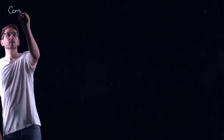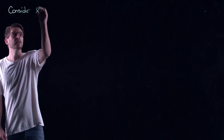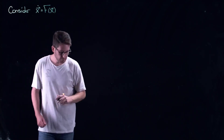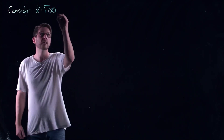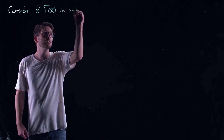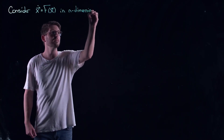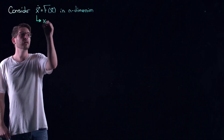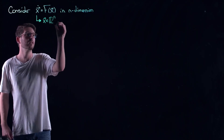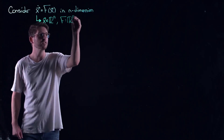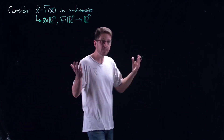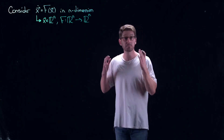I'm going to consider a general dynamical system in n dimensions. So x is a vector in R^n, and f is a function from R^n to R^n. This can be in any dimensions — it could be in 2, in 3, in 5, in 50 million. The principle remains the same. This is how I'm going to show you how you can analyze high-dimensional systems.